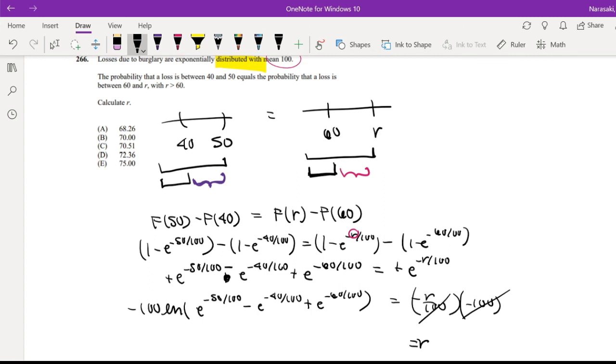So then I get the R is equal to this whole thing right here. Let me type that into my calculator real quick. Ok, so this is equal to 72.36, which is our answer D.